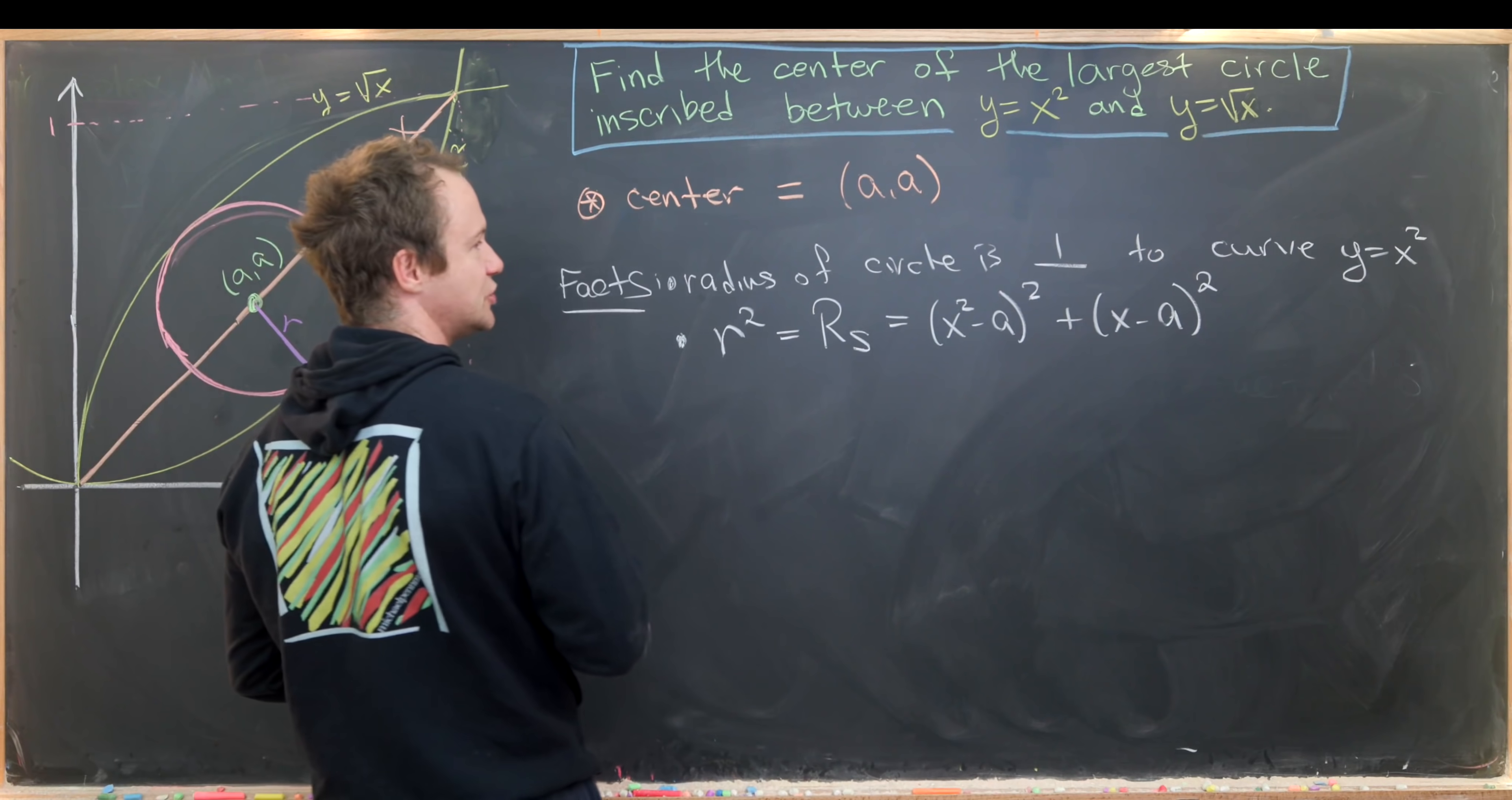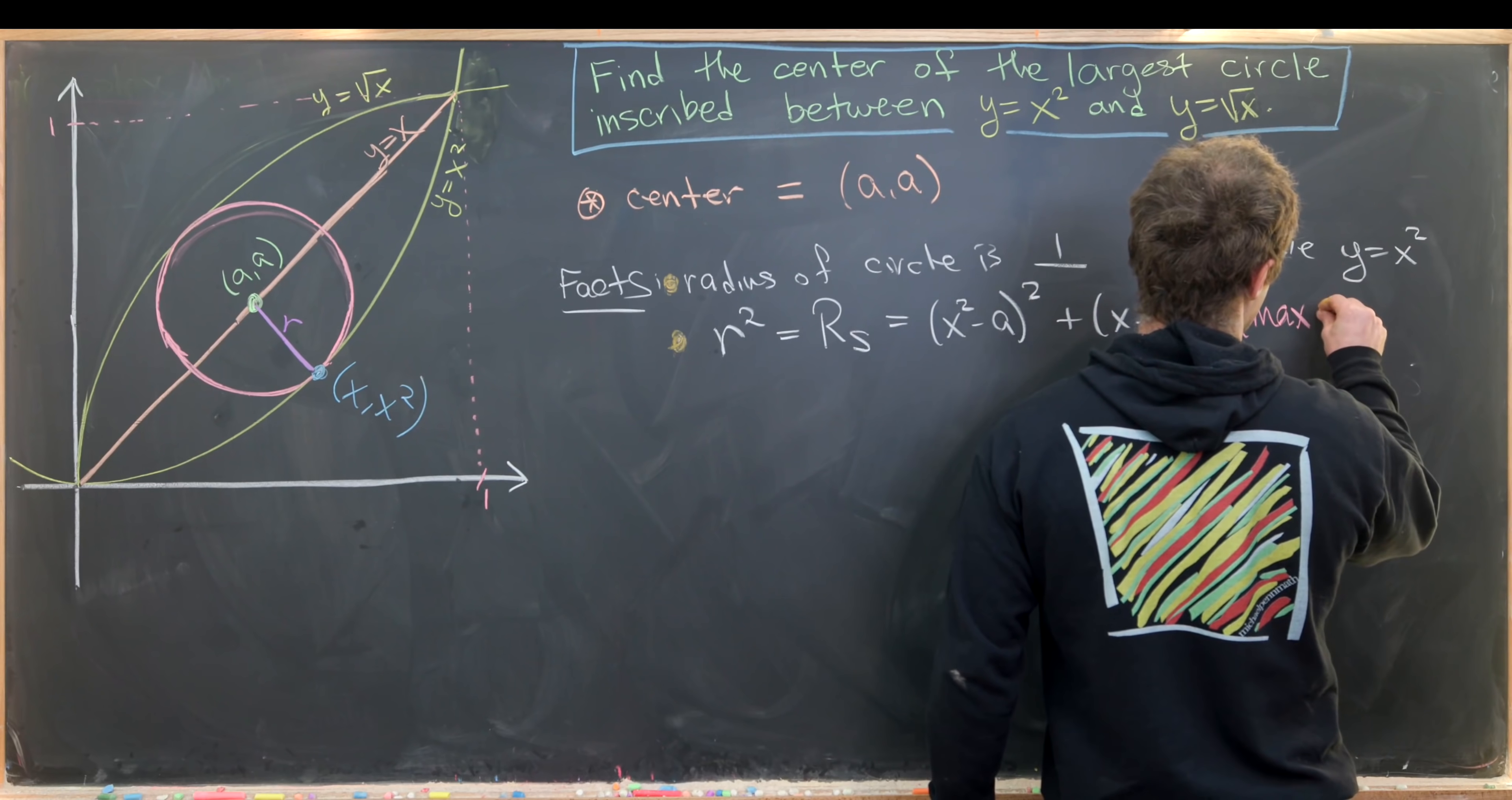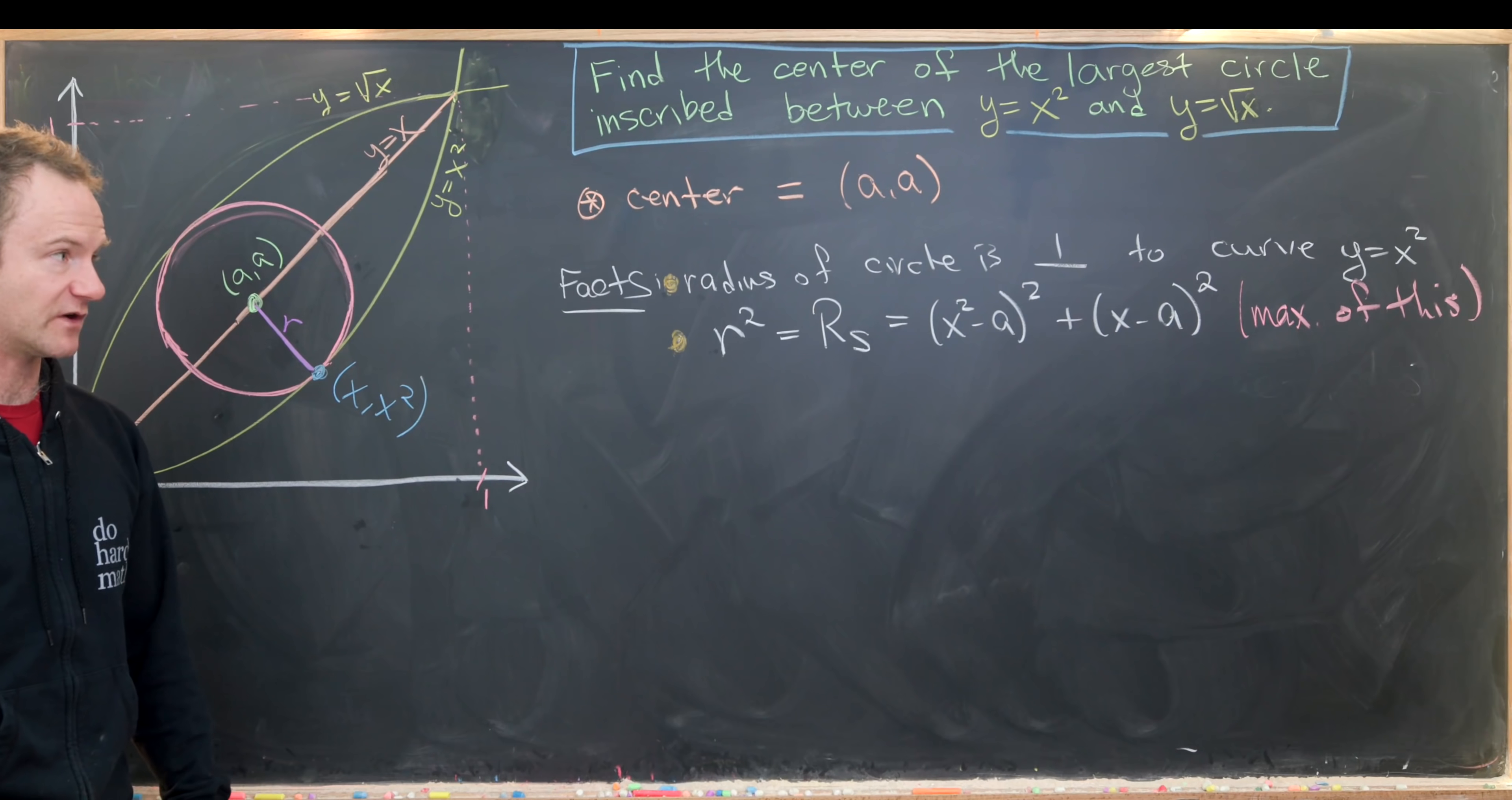These are the two facts that we have right now, and this is the function that we eventually want to maximize. At the moment it's a function of two variables. Maybe we can use the fact about the radius being perpendicular to our curve to make this into a function of one variable.